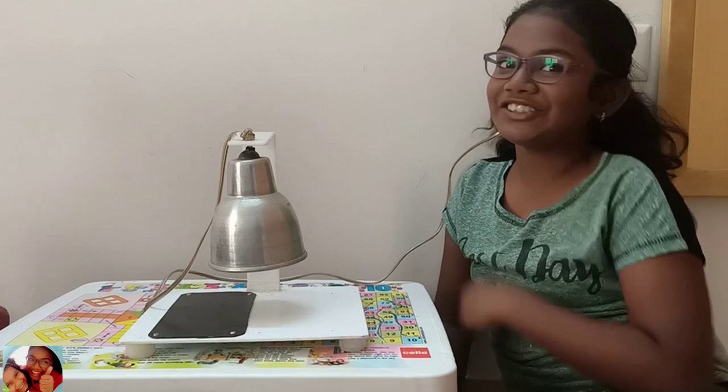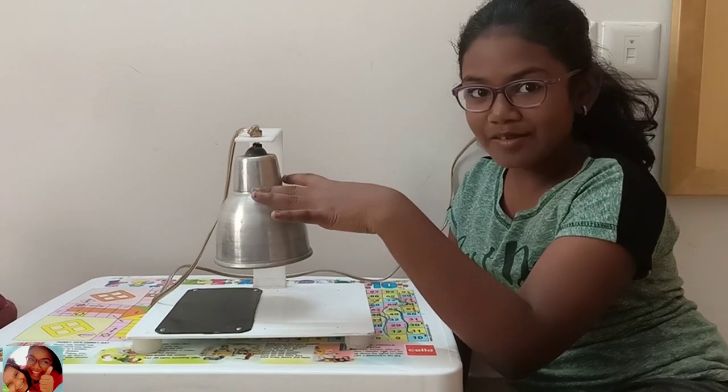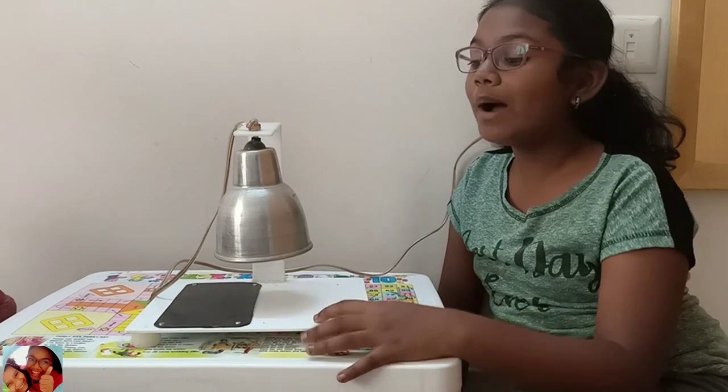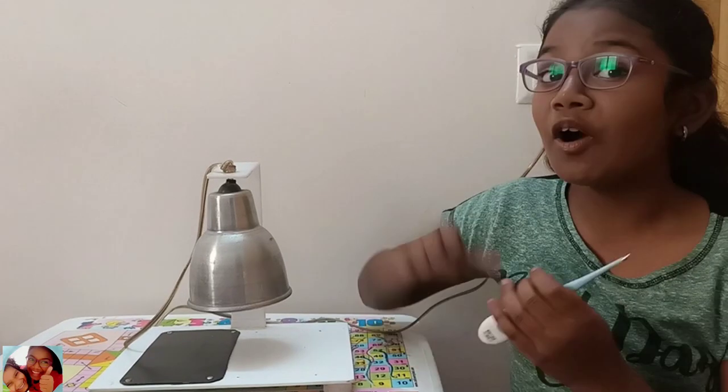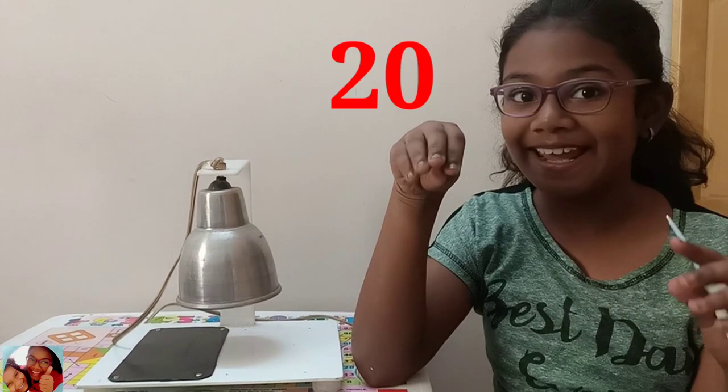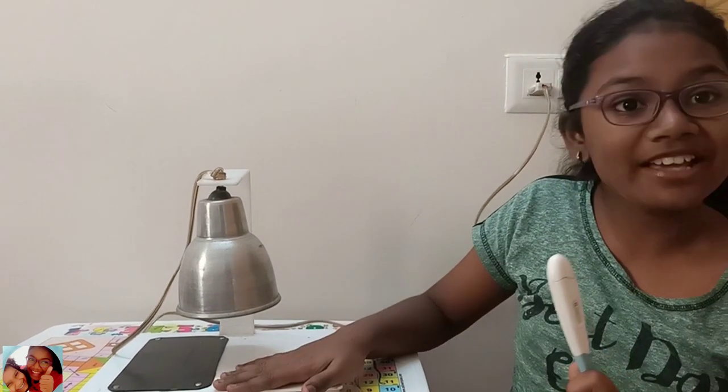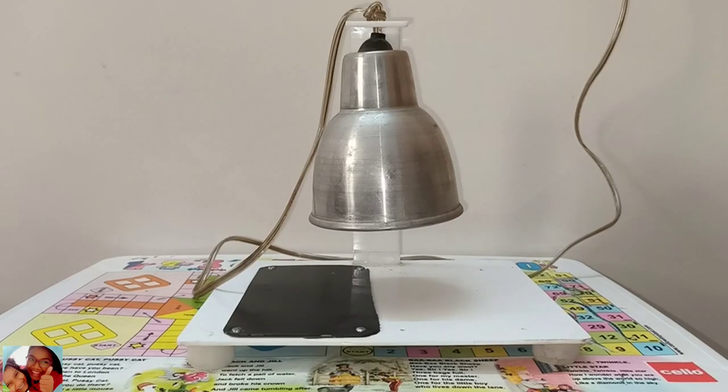Now let us try the experiment. Here we have a bulb and plastic pieces. One plastic piece is black color and one is white. After I turn on the bulb, I am going to count till 10. I am going to use the thermometer to check the temperature. Now let us switch it on.